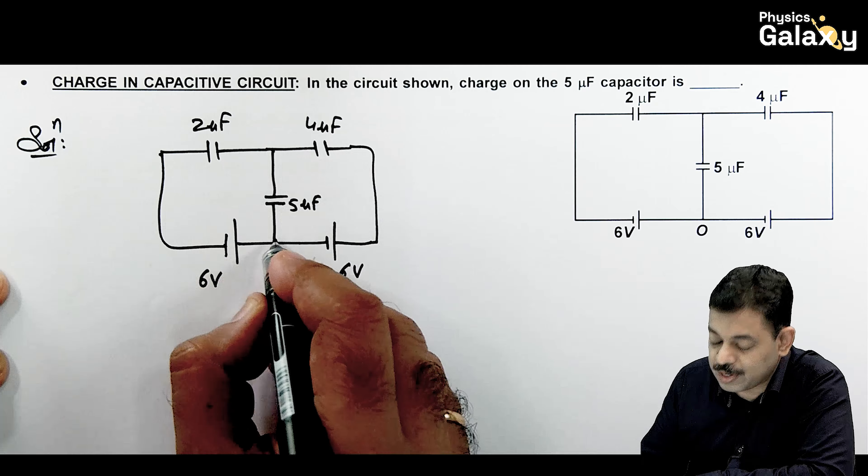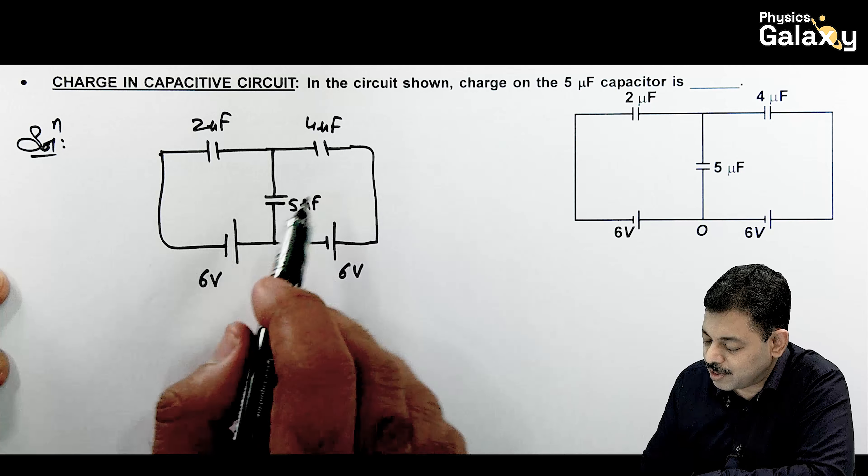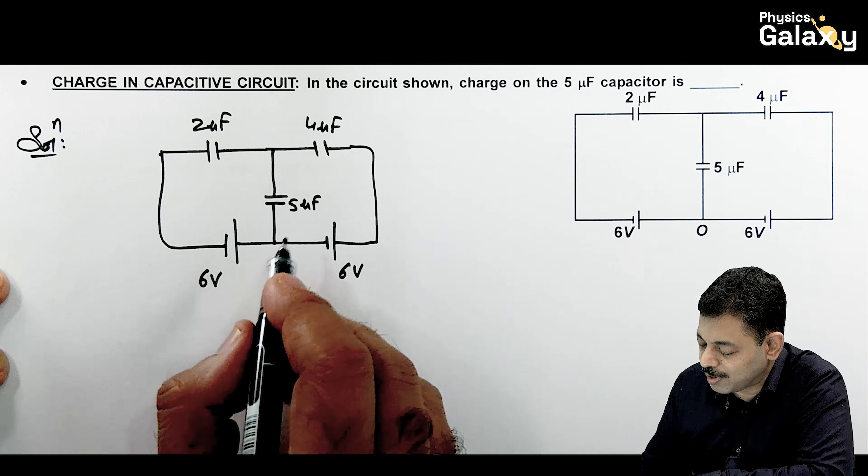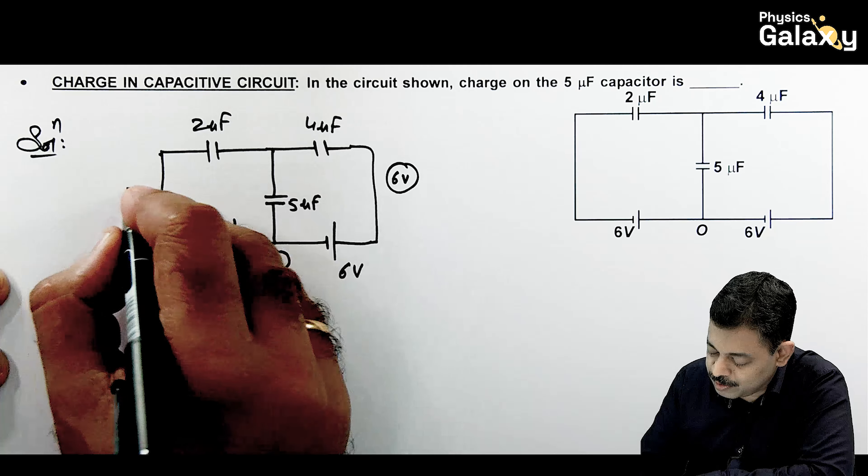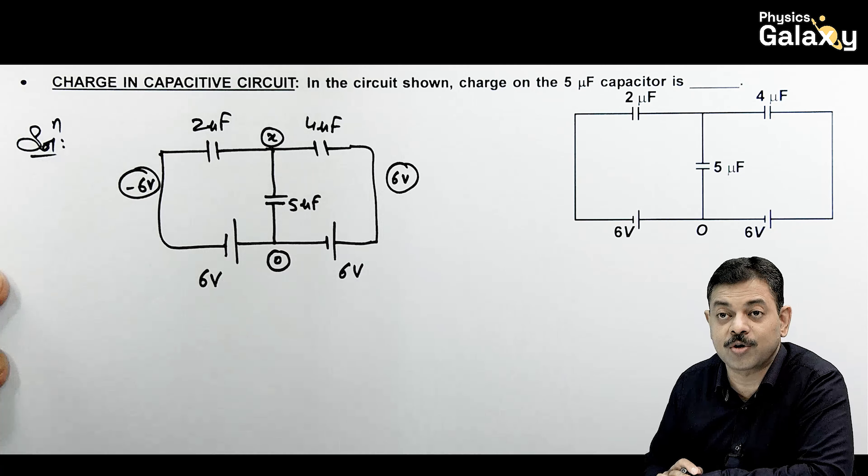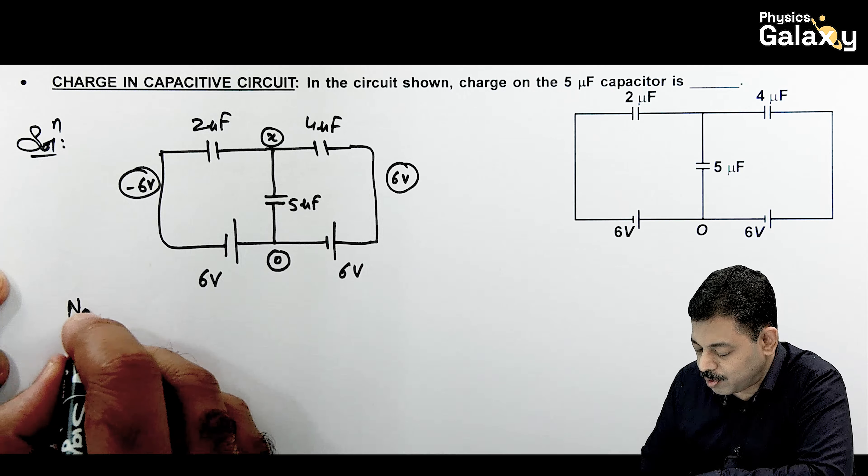Similar question I have already taken in concept videos. You can recall. And it is asking charge on 5 microfarad capacitor we want to calculate. So here the potential is 0. Here it is 6 volt. Here it is -6 volt. Here let us take potential to be X. And if we write nodal equation.